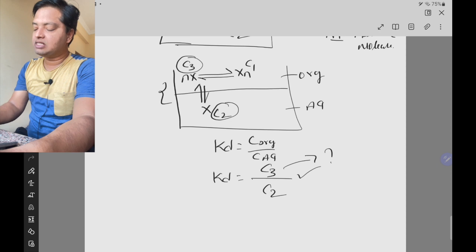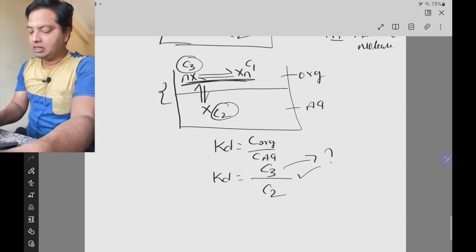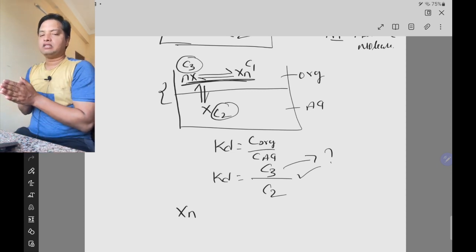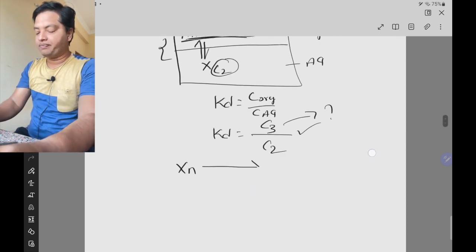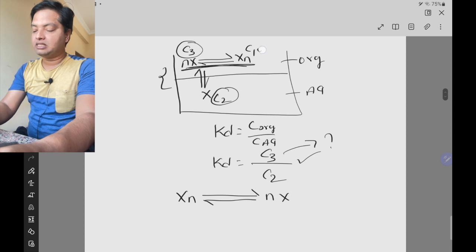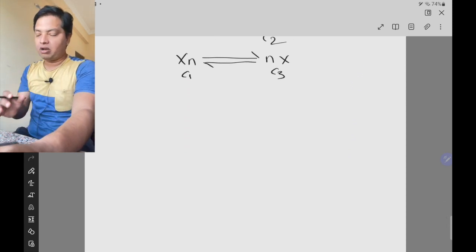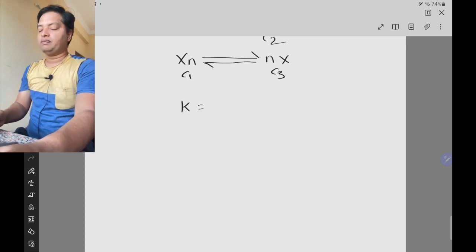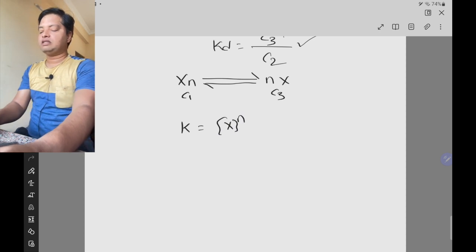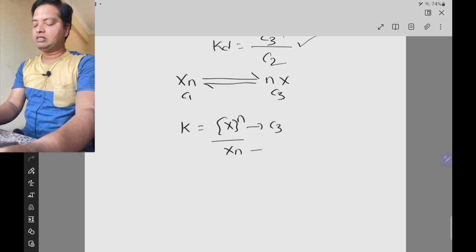We need to find the value of c3. For that, take the association equation: n molecules of x are associating into xn. Reversing this, xn is dissociating into n molecules of x. So the concentration of xn is c1 and the concentration of n x is c3. Now apply the law of mass action: constant k equals products raised to the power of their stoichiometric coefficients divided by reactants raised to the power of their coefficients. The product concentration is c3 with power n, and the reactant is c1 with power 1. So: k equals c3 to the power of n divided by c1.